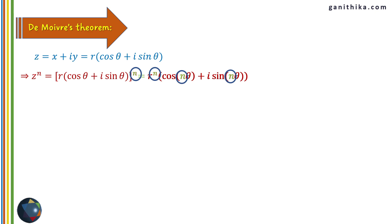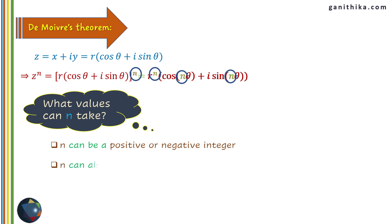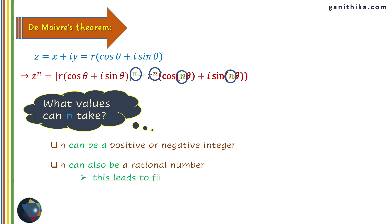Before going further, consider what values n can take. Can n be 0, positive integers, negative integers, rational numbers? In this theorem, n can be positive or negative integers. We don't consider n = 0 because z⁰ = 1 is a trivial case. n can also be a rational number — raising a complex number to a rational power means finding the nth root, and z^(1/n) will give n different solutions.